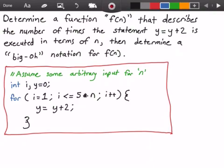Now in the red rectangle here I have some pseudocode where we're going to assume some arbitrary input for our variable n. Next we have two variables i and y that are both integer values where we set y equal to 0.